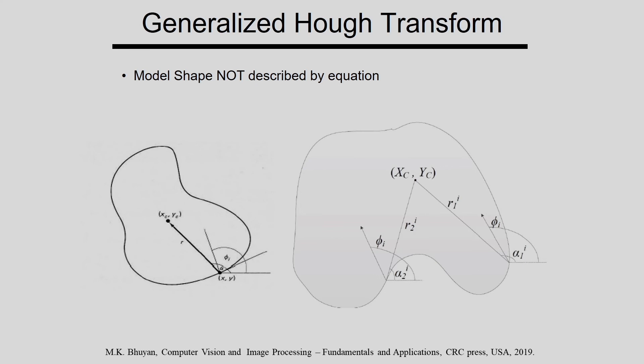The next point is the generalized Hough transform. What is it? The model shape is not described by an equation. I have discussed detecting straight lines using y = mx + c or x·cos(θ) + y·sin(θ) = ρ, and circles using (x−a)² + (y−b)² = r². But if I consider an arbitrary object shape, I cannot represent it by an equation, so I apply the generalized Hough transform.